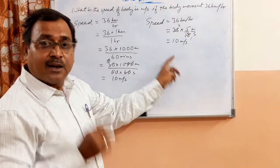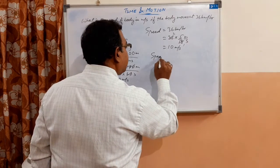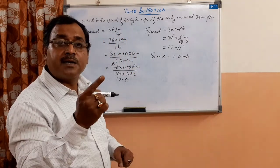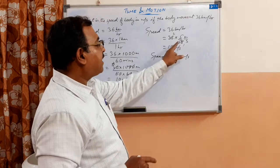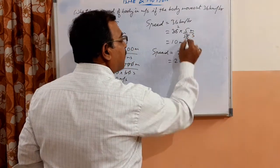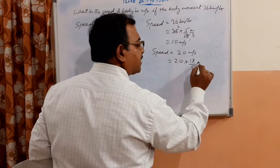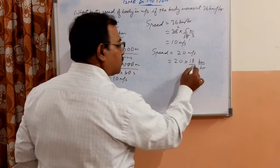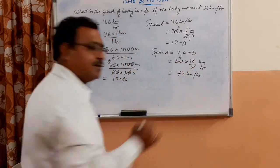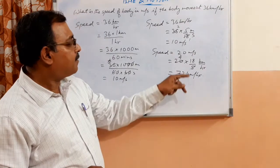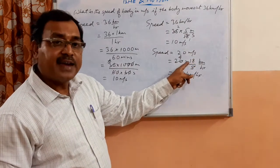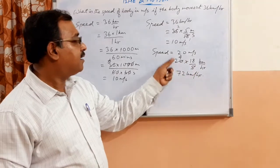Definitely the shortcut is easier. Now supposing the opposite is given — speed is given as 20 meter per second and you want to convert it into kilometer per hour. Here you write the same fraction but reverted: instead of 5/18 you write 18/5, and in place of meter per second you write kilometer per hour. So 20 into 18 by 5 gives you the answer in kilometer per hour.